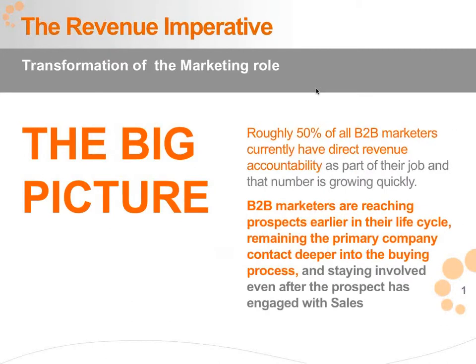First, let's start with the big picture of why this really matters. We've launched something called the Revenue Imperative, which is basically driving market research across the industry right now and also tracking industry trends. Roughly 50% of all B2B marketers now have direct revenue accountability as part of their job description and comp plan. This trend is here right now — over half of your counterparts are already driving against a revenue number. B2B and B2C marketers are reaching prospects earlier in the sales cycle and staying engaged deeper into the buying process, well past passing a lead over to sales.